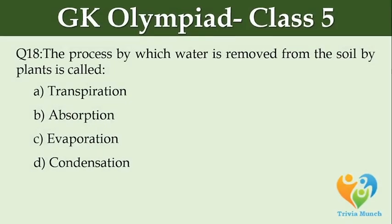The process by which water is removed from the soil by plants is called ___. Option A: Transpiration. Option B: Absorption. Option C: Evaporation. Option D: Condensation.